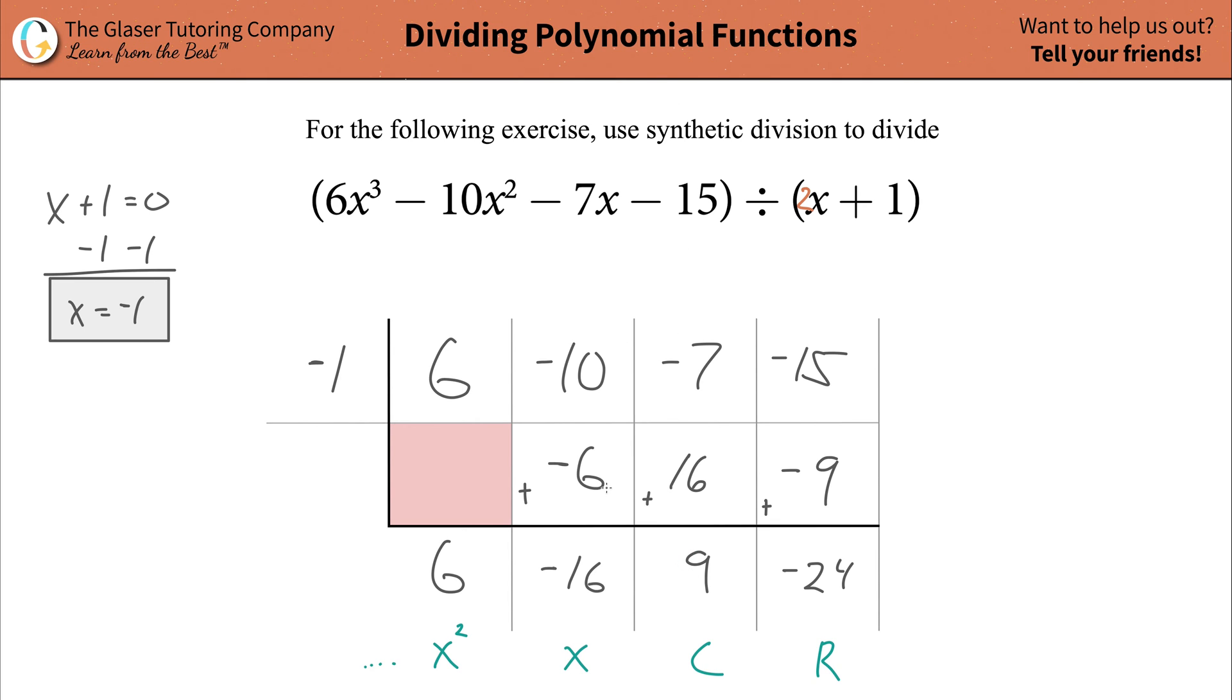So what we're now going to do is define the quotient fully. We're just going to basically team these values on up and just write them in an equation. So the first term is going to be that 6x squared. The second term is going to be minus 16x. The next term is going to be positive 9. And the last term, whatever this is, you're going to take that value, it's a negative, and place the remainder, 24, and divide it by your divisor.